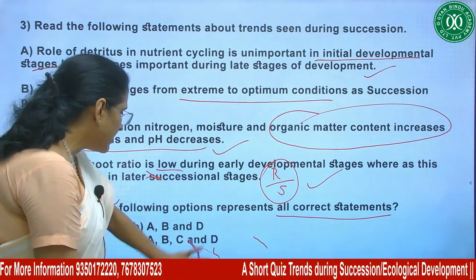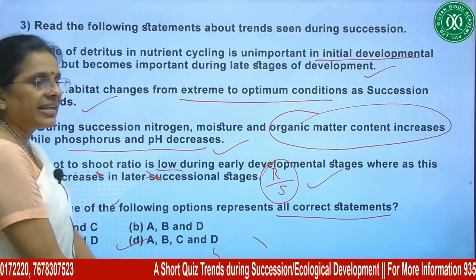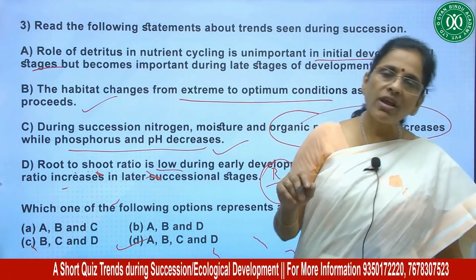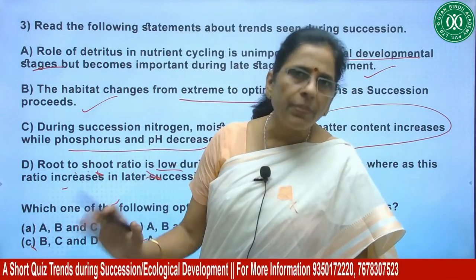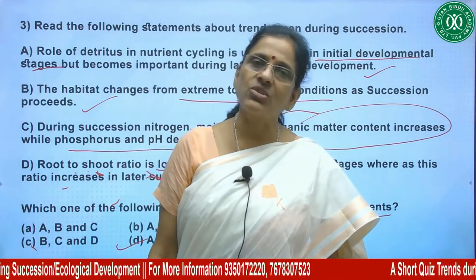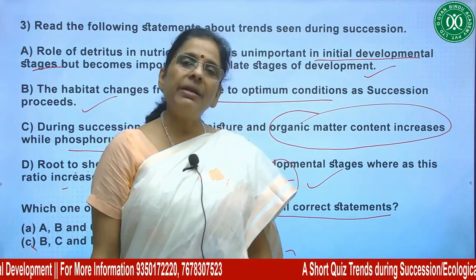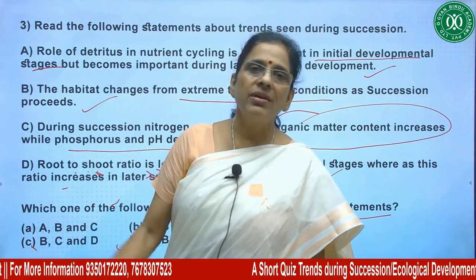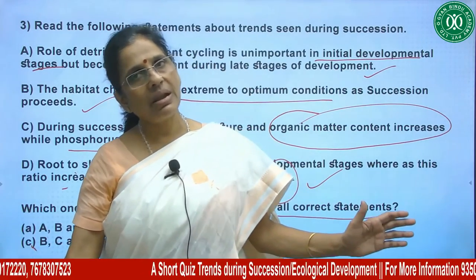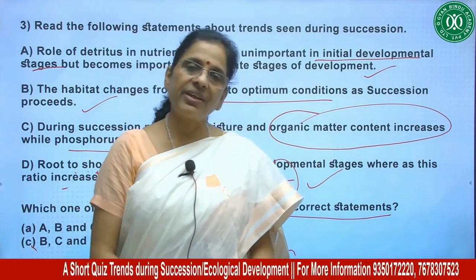So option D is correct, meaning all four statements are correct. That was a short quiz on trends seen during succession. If you have any questions related to this topic or any other topic related to succession, please send your questions and comments. The next video will be about the intermediate disturbance hypothesis — also related to succession — exploring where biodiversity is highest: in initial, mature, or intermediate stages. Till then, stay safe and healthy. Thank you.